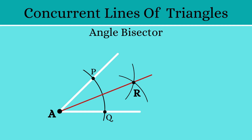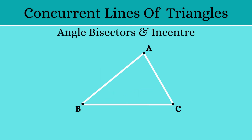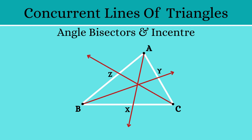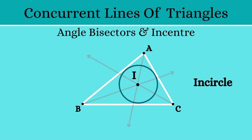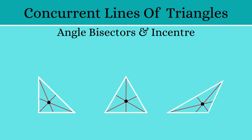Now that we know how to construct the angle bisector, let us draw the angle bisectors for triangle ABC. Let the angle bisector of angle A be AX, the angle bisector of angle B be BY, and that of angle C be CZ. All three angle bisectors intersect at a single point. Let's name this point I, and this point is called the incenter of the triangle. Using this incenter, we can draw the incircle of the triangle. Also, an important point to note is that the incenter will always lie inside the triangle.